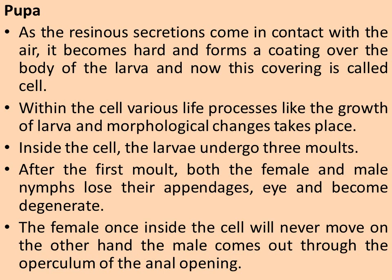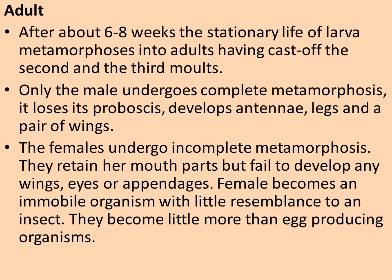After the first molt, both female and male nymphs lose their appendages and eyes and become degenerate. The female, once inside the cell, will never move. On the other hand, the male comes out through the operculum of the anal opening — a very characteristic feature. After about six to eight weeks of stationary larval life, metamorphosis into adults occurs. Only the male undergoes complete metamorphosis: it loses its proboscis and develops antennae, legs, and a pair of wings.